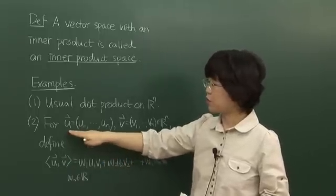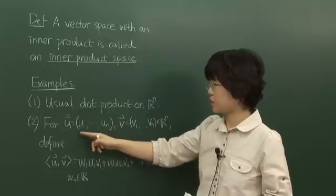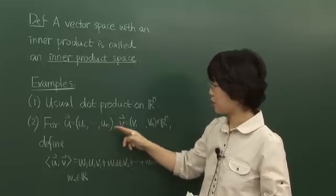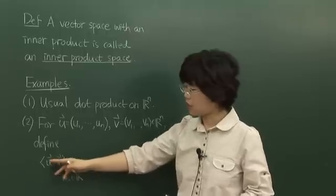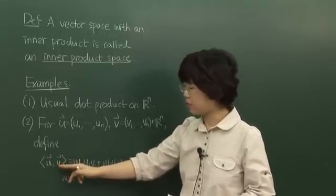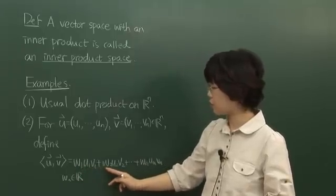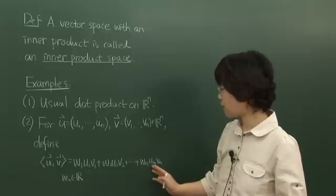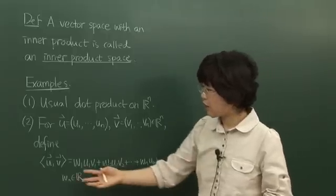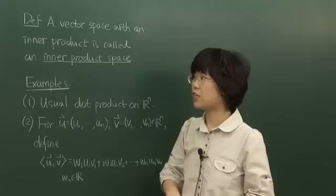Suppose we have two vectors, vector U and vector V, which are given with these coordinates, and define angle bracket of U and V to be W1 times U1V1 plus W2 times U2V2 plus Wn times UnVn. Then this also satisfies all the four axioms of inner product.